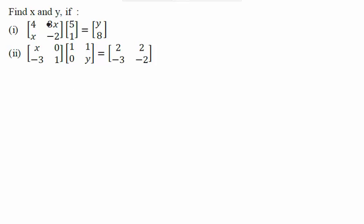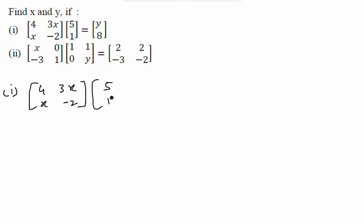In this particular question, we have to find x and y in both parts — in part 1 and in part 2. When you look at part 1, you will see that we have multiplied two matrices: 4, 3x, x, and minus 2 with 5 and 1, and we get some result written as y and 8. First of all, let us understand whether we can actually multiply these two matrices or not. We cannot multiply all matrices — there is some restriction.